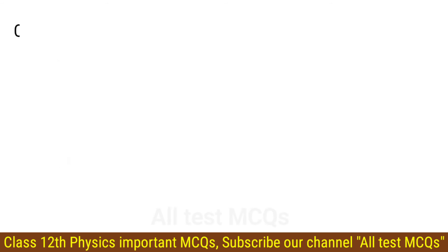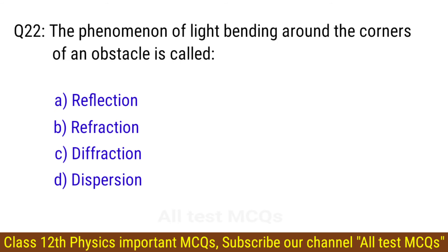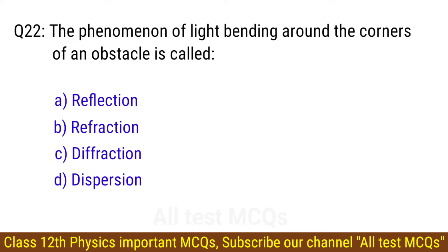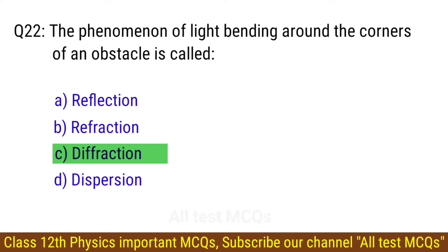Question number 22. The phenomenon of light bending around the corners of an obstacle is called? The right answer is option C: Diffraction.